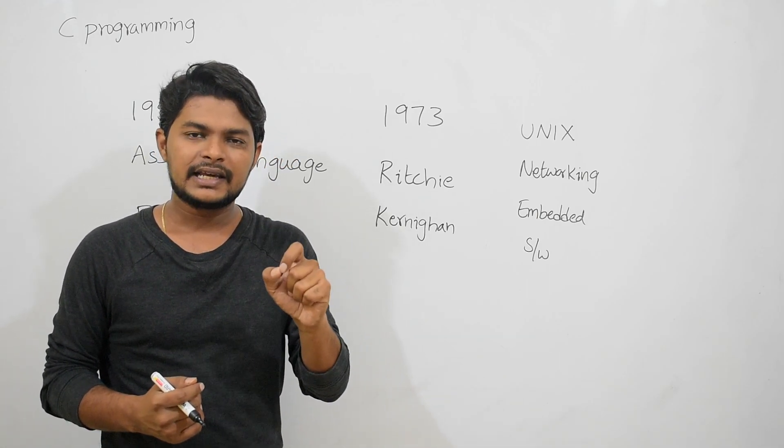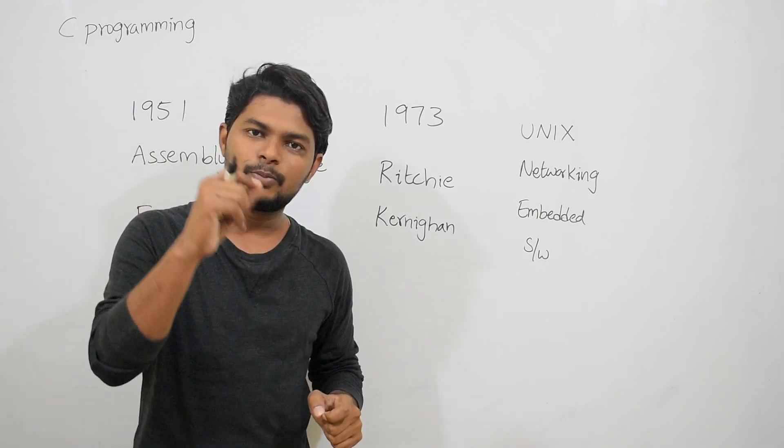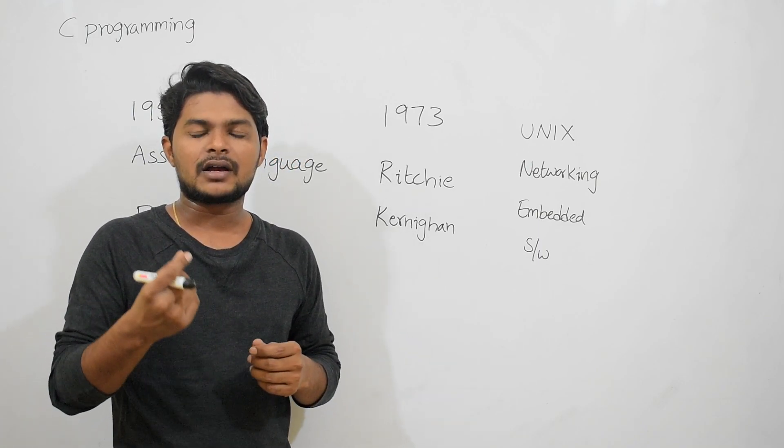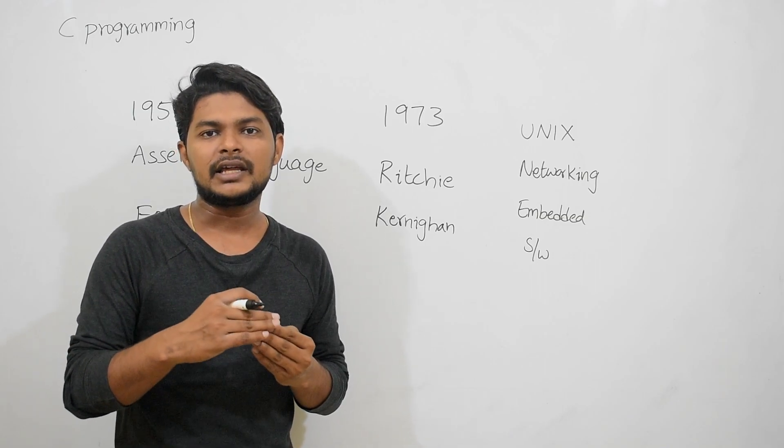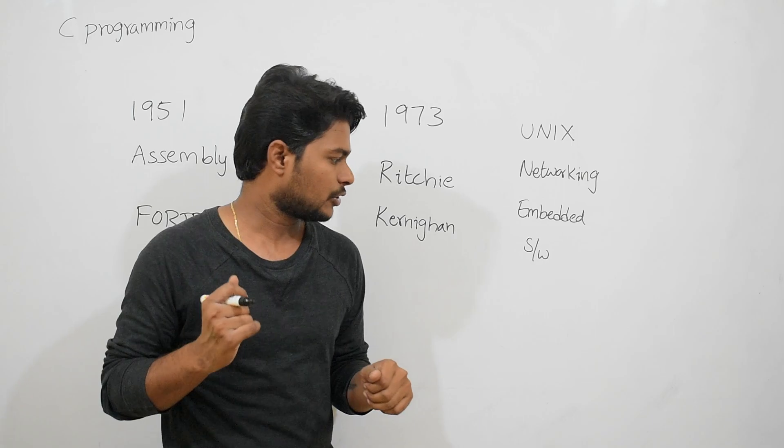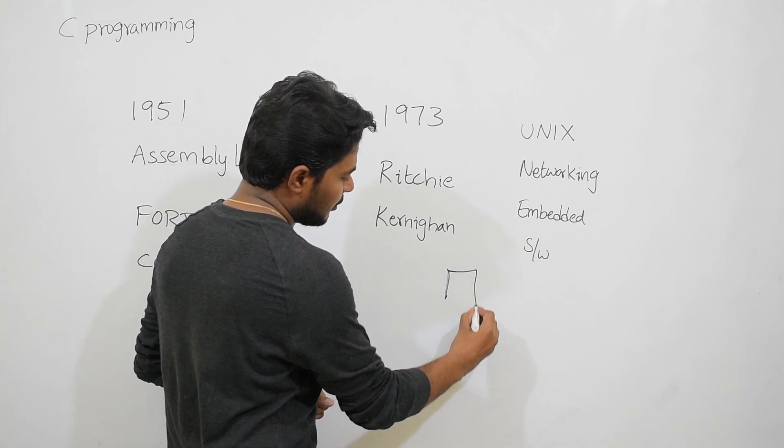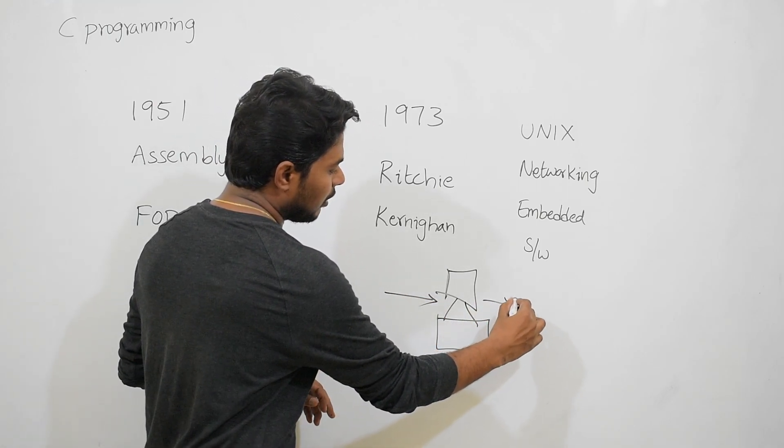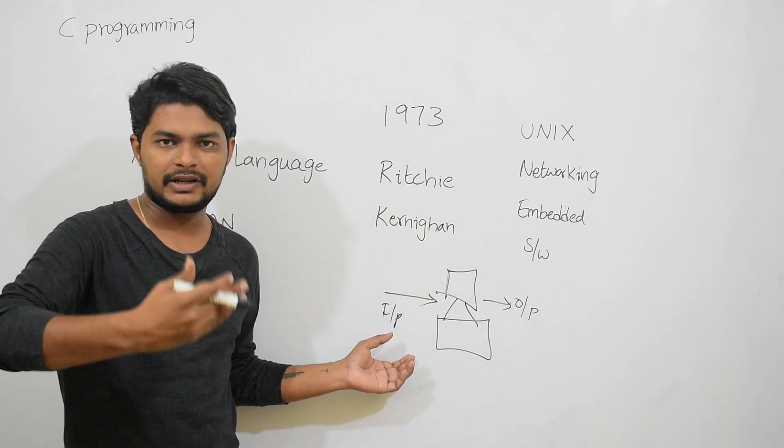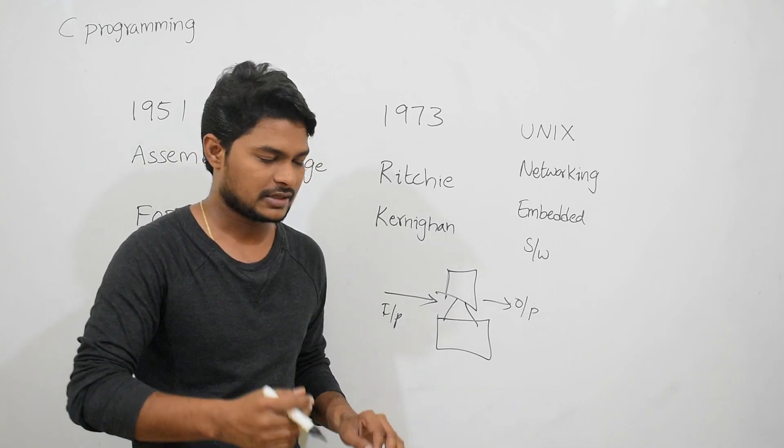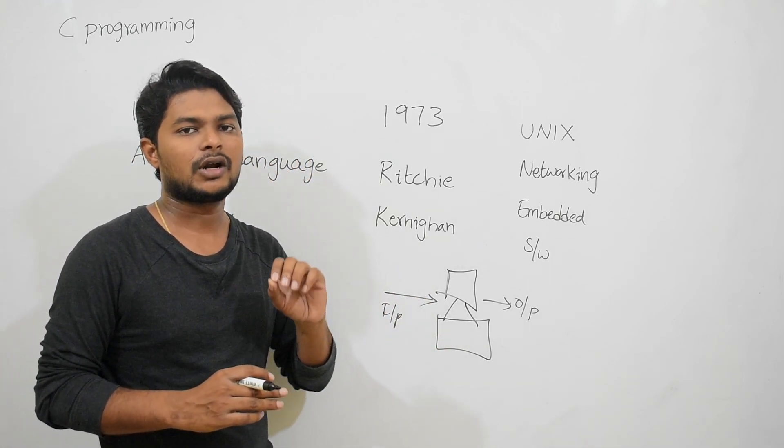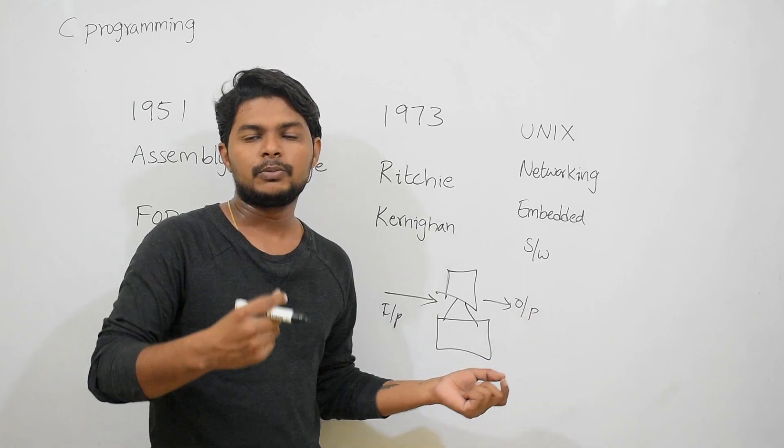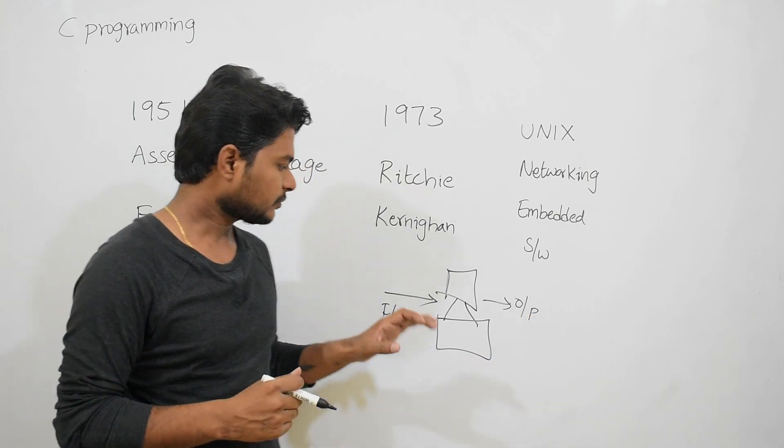If you observe clearly, you are giving an input instruction to the computer, like opening a web browser or document. The computer understands that input instruction and opens the document. Let's say this is a computer - you give input and it gives output. We have devices for input and output, which is related to computer hardware. As of now, just remember we give input to the computer through keyboard or mouse, and we get output.